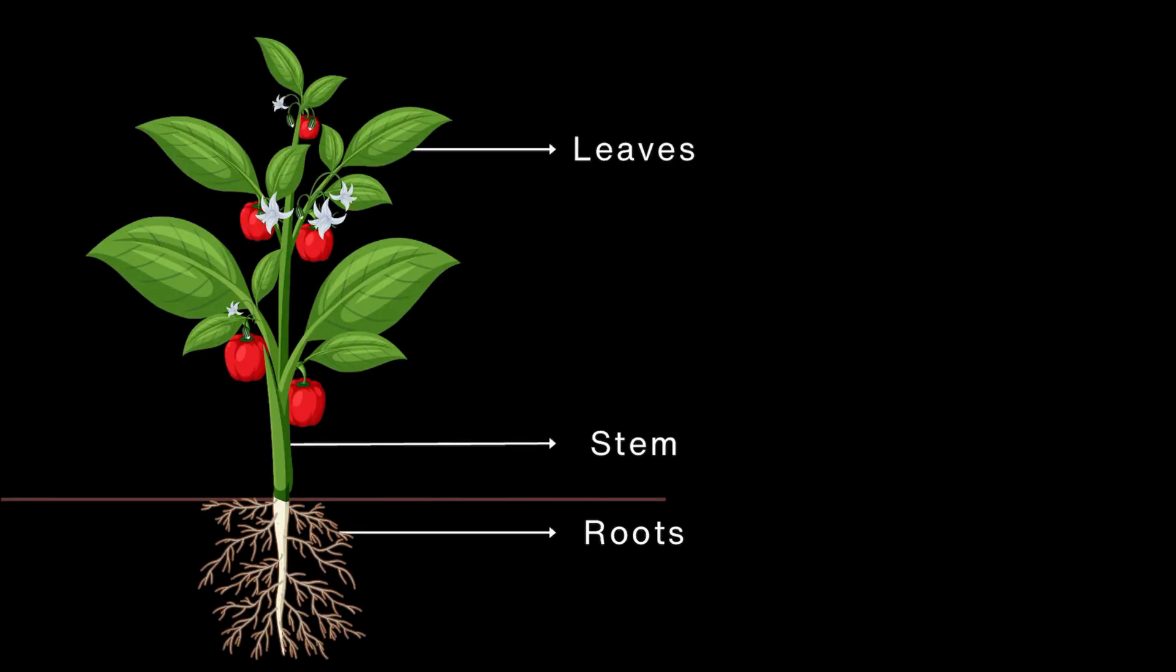Just like how our skin protects us, plants have a thin outer layer that wraps around their whole body. Roots, stem and leaves.